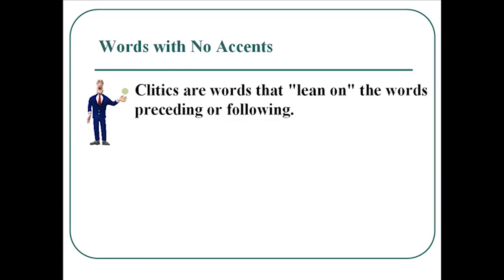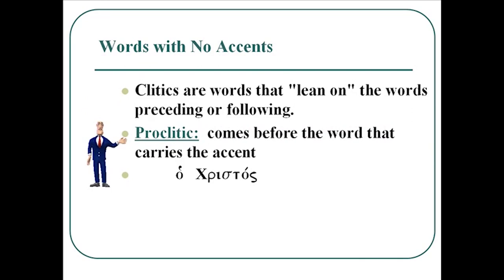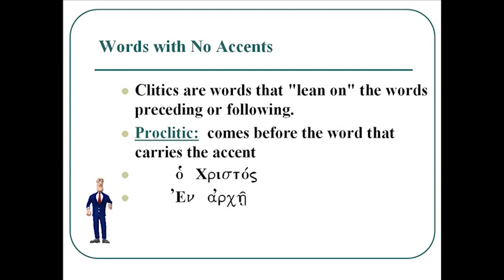Now some words in Greek have no accent at all. These are usually small words called clitics — words that lean on the preceding or following word. There are the proclitics, which come before the word that carries the accent. So we have, for example, ho Christos — the ho has no accent of its own, but the accent is carried by the Christos. And en arche: the en has only a breathing mark and no accent mark, but the accent mark, the circumflex, is carried by arche.